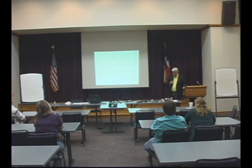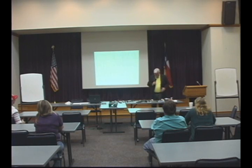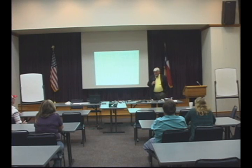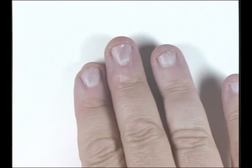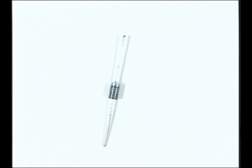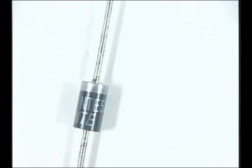Welcome back. We're going to continue talking about components. After tubes, we move to solid state devices. One of the very first solid state devices was a diode — this is a silicon diode, pass it around. Just like a tube diode, it only lets current flow in one direction, so it converts AC into DC.